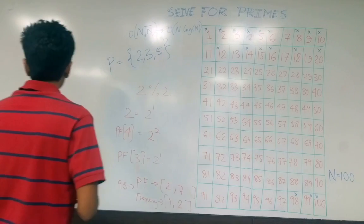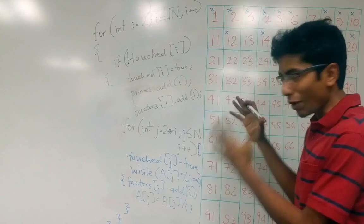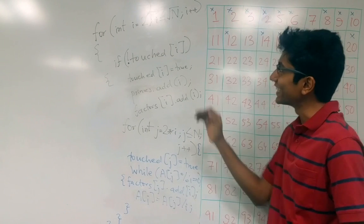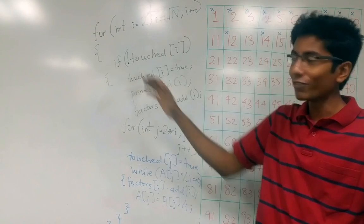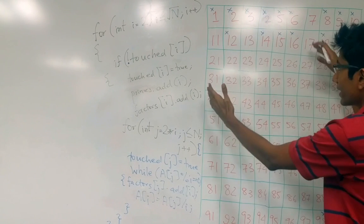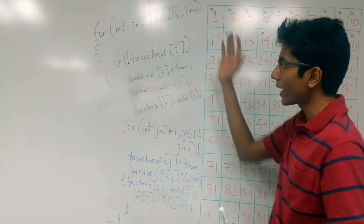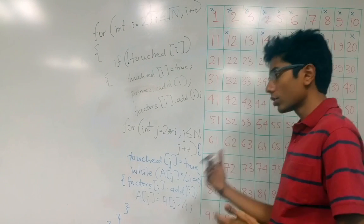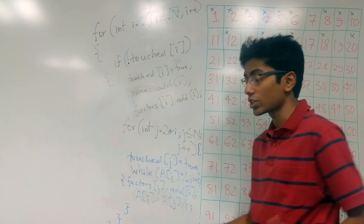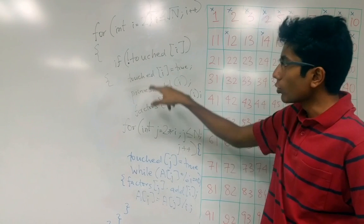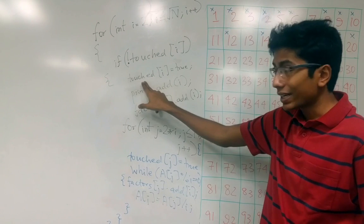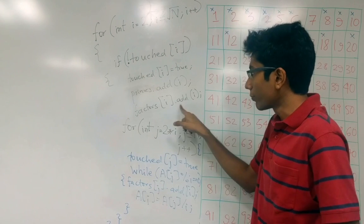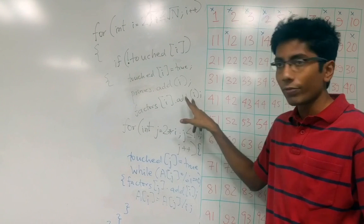So this is the code — it's purposely not written very clearly, but it will work. You have an outer loop which goes from 2 to √n. That's basically the i we were talking about. If i is not touched, that means it is prime. So when traversing the outer loop and you come to a position not yet touched, it is prime — mark it as prime, add it to the prime list, mark it as touched, and add it to the factors of that number. So i now has itself as a factor.